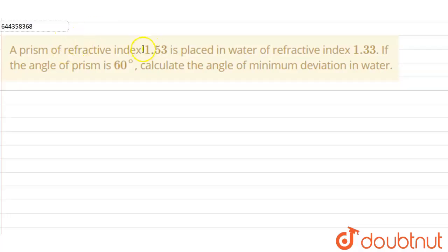A prism of refractive index 1.53 is placed in water of refractive index 1.33. If the angle of the prism is 60 degrees, calculate the angle of minimum deviation in water. Okay, so in the question we have been given the refractive index of the prism as 1.53 and the refractive index of water in which the prism is placed is 1.33.